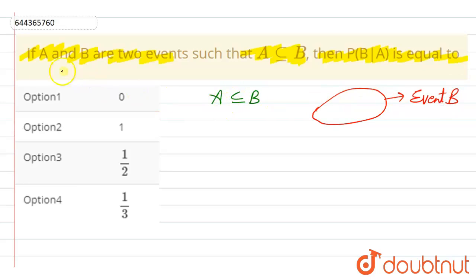Then A is subset of B. So event A lies inside B. It can be equal also or it would be less than B.